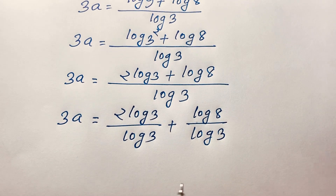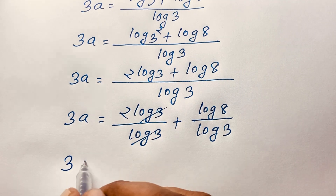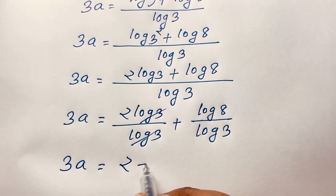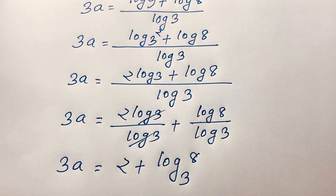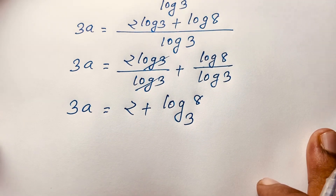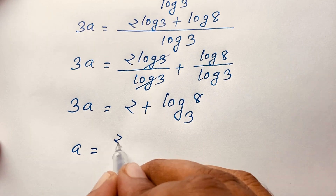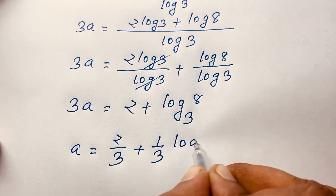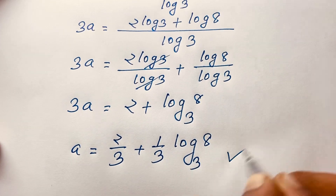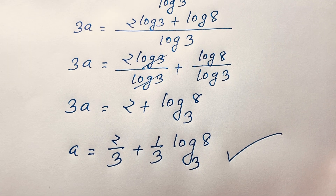The log 3 terms cancel out, giving us 3a is equal to 2 plus log 8 base 3. Now, dividing both sides by 3, a is equal to 2 over 3, plus 1 over 3 times log 8 base 3. This is our final answer.